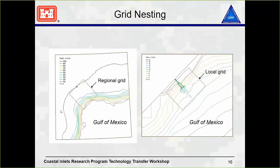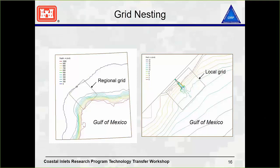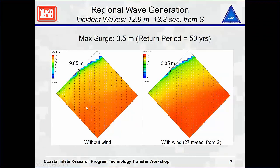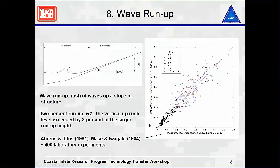If you have a large regional area and a CMS-Wave grid already developed, you can run it with a certain spectra and then have output spectra for your smaller grid. When you're actually in production mode, you only need to be working from the smaller grid and not the entire large domain. We also have regional wave generation showing differences in surges with and without wind.